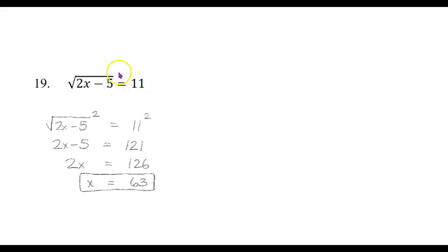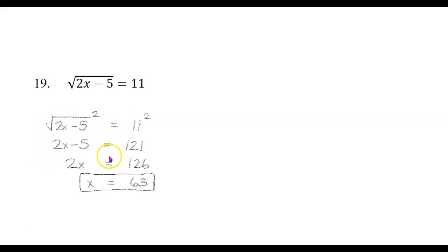To undo the square root, we square both sides. So the square root of 2x minus 5 squared equals 11 squared. Squaring undoes the square root, so the square root squared would just be 2x minus 5. And on the other side, 11 squared is 121. Now finish solving: add 5 to both sides and we get 2x equals 126. Divide both sides by 2, we get x equals 63.